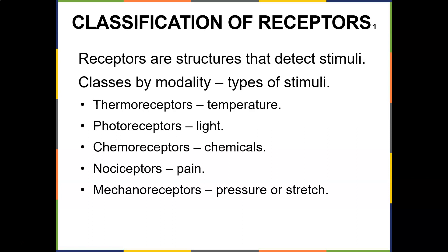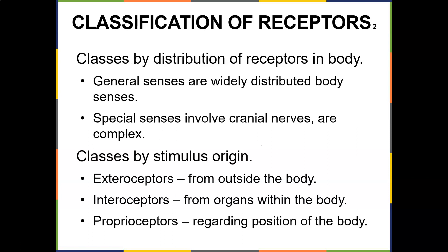Classes of receptors by modality: thermoreceptors detect temperature, photoreceptors sense light, chemoreceptors sense chemicals, nociceptors sense pain, and mechanoreceptors sense pressure or stretch.